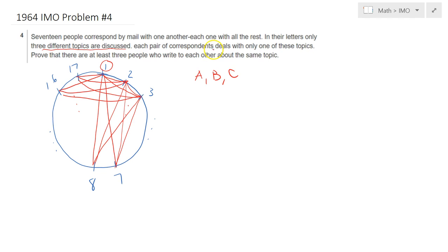Okay, finally each pair of correspondence deals with only one of these topics, which we discussed earlier. So there are 3 topics and for instance if person 5 and 16 are talking, they talk about one of these 3 topics.